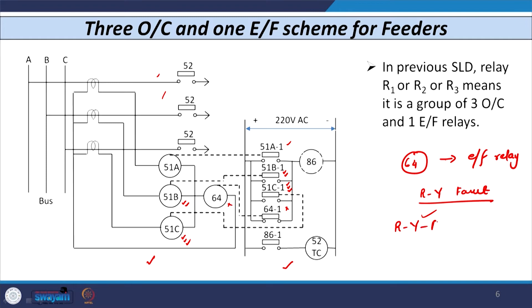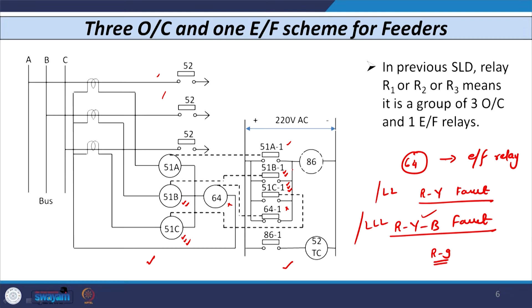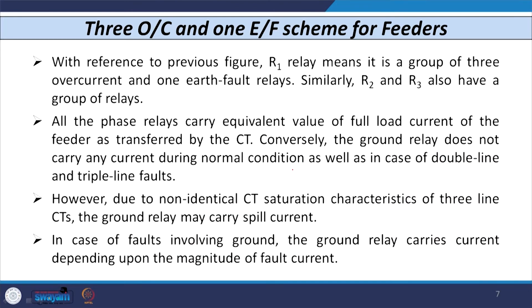In case of LL fault or triple L fault, no current flows through the ground unit 64 because it is a balanced condition. In case of a fault involving ground — say an R-to-ground fault — the current in the residual circuit increases, the contact 641 trips, which energizes relay 86, and further tripping is initiated. In each case, each relay operates for or is responsible for a different type of fault.